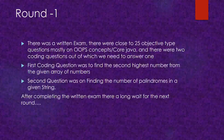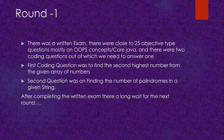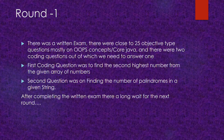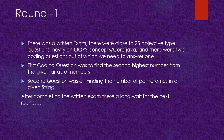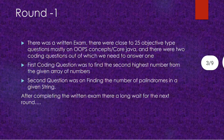The second coding question was finding the number of palindromes in a given string. You need to write the entire core logic without any syntax errors — it should be like production-ready code. If they run it, it should produce the desired output. After completing the written exam, there was a long wait before the next round.